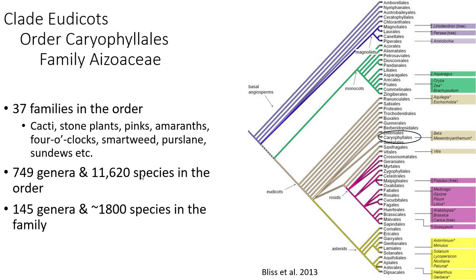Within the Aizoaceae there are currently 145 genera and around 1,800 species in the family. The phylogeny of the Caryophyllales, like many large plant clades, remains unclear, and phylogenetic studies often recover alternative hypotheses — and this is very true for the Aizoaceae.